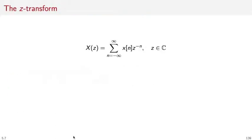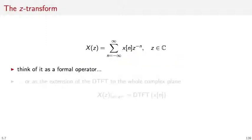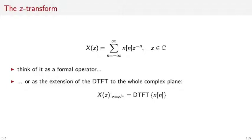The Z-Transform is a formal operator that maps a discrete time sequence x[n] onto a function of the complex variable z. It is defined as the sum for n from minus infinity to plus infinity of x[n] times z to the minus n. Think of it as a formal operator, or alternatively as the extension of the DTFT formula to the whole complex plane. It is easy to see that the Z-Transform computed for z equal to e to the j omega is actually the DTFT.